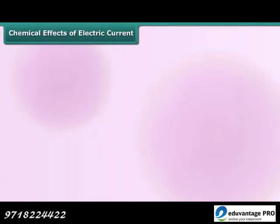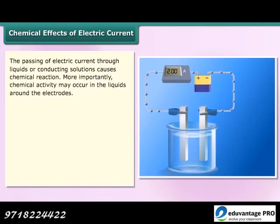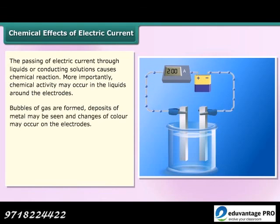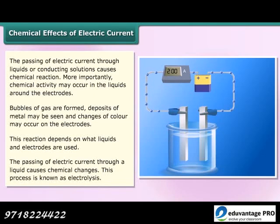Chemical effects of electric current: The passing of electric current through liquids or conducting solutions causes chemical reactions. Chemical activity may occur in the liquids around the electrodes — bubbles of gas are formed, deposits of metal may be seen, and changes of color may occur on the electrodes. This reaction depends on what liquids and electrodes are used. The passing of electric current through a liquid causes chemical changes; this process is known as electrolysis.